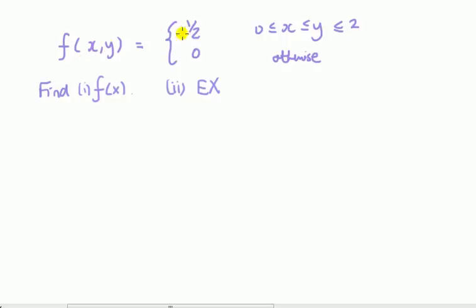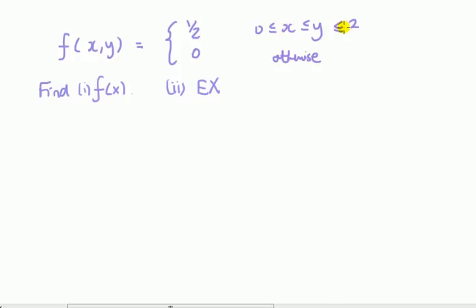What we notice is that the limits of the variables depend on each other. X is between 0 and y, so the upper limit of x is y, whereas y has a lower limit of x and an upper limit of 2.